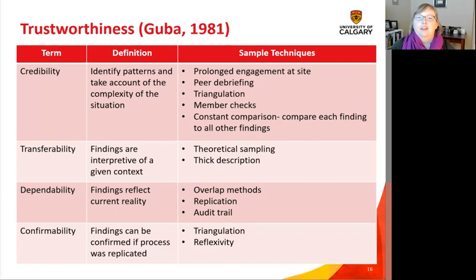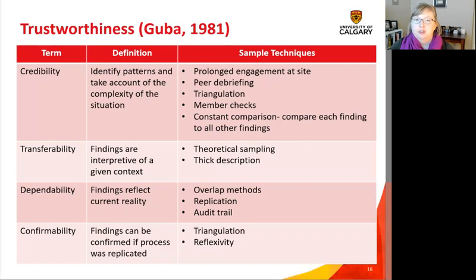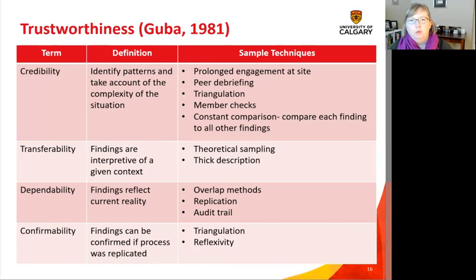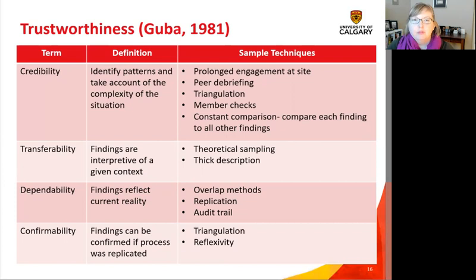There are lots of frameworks and this is kind of controversial, but I think the Lincoln and Guba trustworthiness framework covers general things that most people agree on. It's not without controversy, but this is the most universal framework. You want to see words like credibility, transferability, dependability, and confirmability, and you want to look in the paper and see that they're using some of those techniques in the method section. When you're appraising it, you're looking for those things. If you don't see them there, you need to be worried.